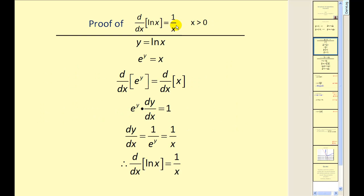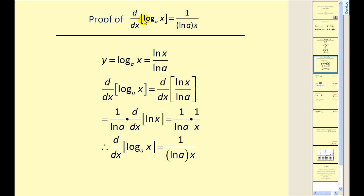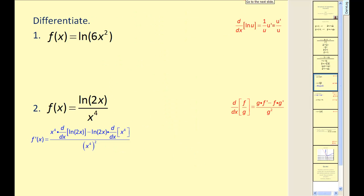I'll briefly outline the proof of the derivative of natural log x. Essentially what we do is write this as an exponential equation, take the derivative of both sides, apply implicit differentiation, and solve for dy/dx to obtain our derivative formula. For the derivative of log base a of x, we apply the change of base formula, then take the derivative, which gives us 1 over (natural log a) times 1 over x. In both cases we apply the chain rule when needed.